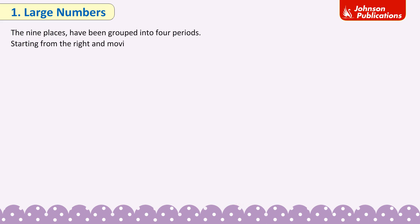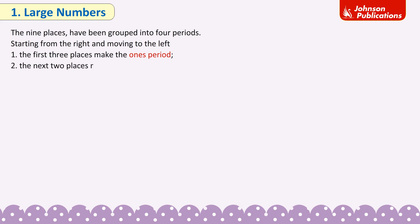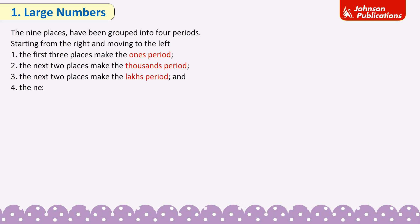The digits have been grouped into four periods, starting from the right and moving to the left. 1. The first three places make the ones period. 2. The next two places make the thousands period. 3. The next two places make the lakhs period. And 4. The next two places make the crores period.